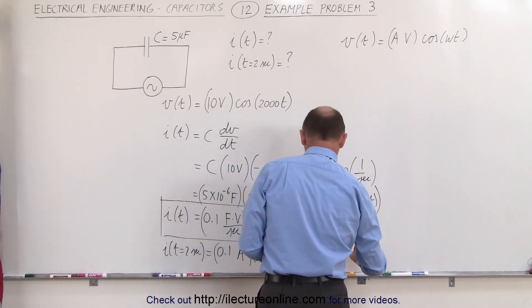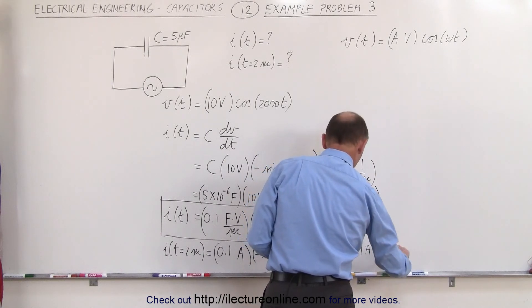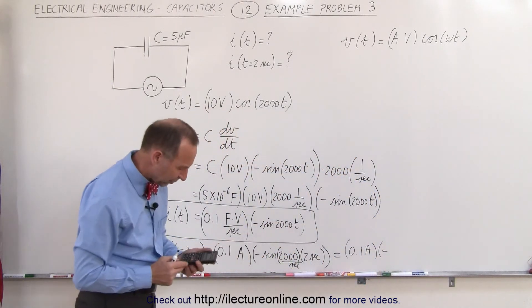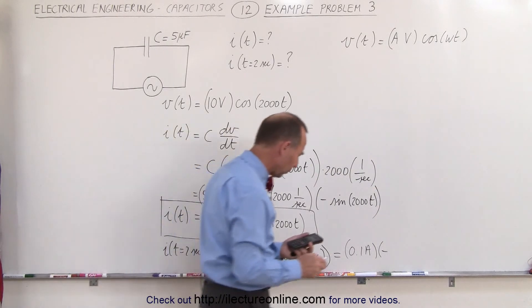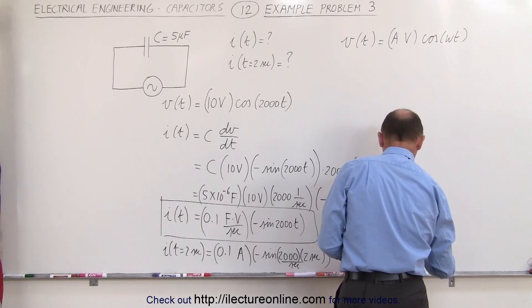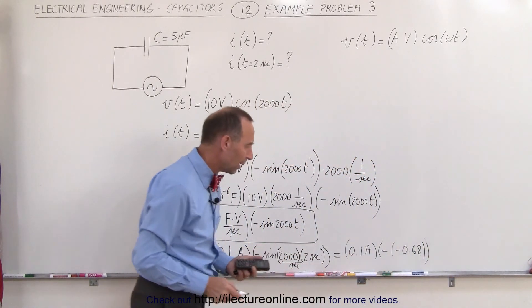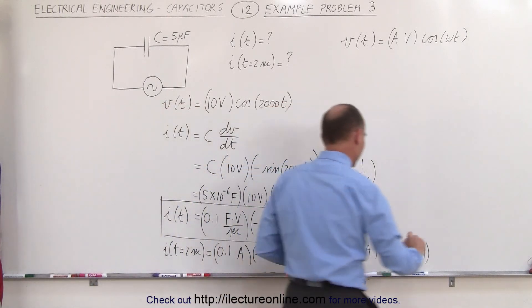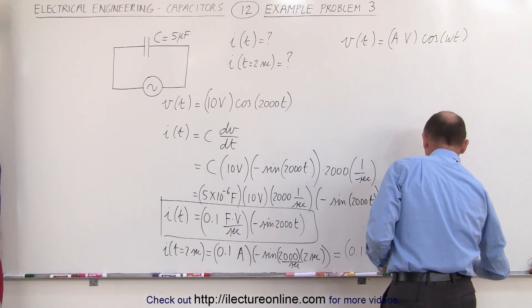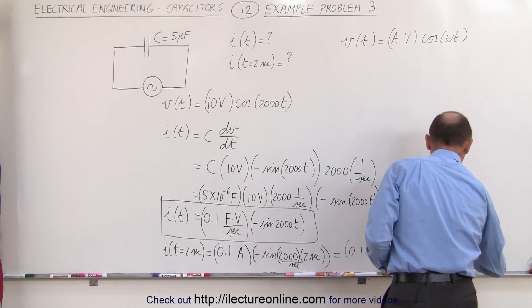So that would be equal to 0.1 amp multiplied times a minus sine of 4000, which is a minus 0.68. So it's a minus times a minus 0.68. When we multiply, the minuses cancel out, which gives us a current of 0.068 amps at that moment in time.